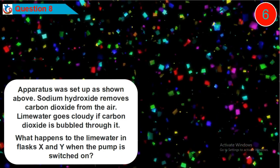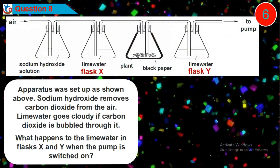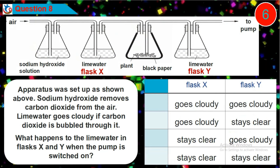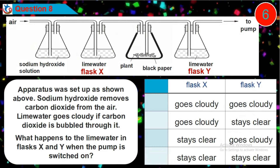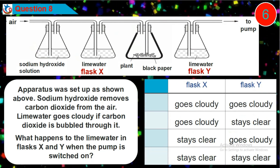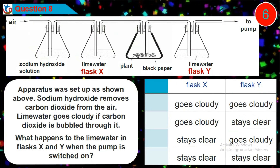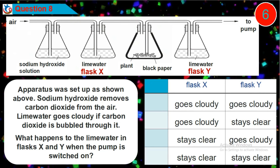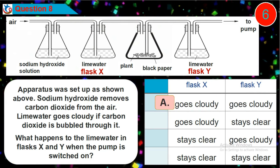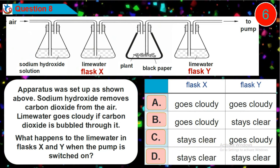Question eight: apparatus was set up as shown. Sodium hydroxide removes carbon dioxide from the air; lime water goes cloudy if carbon dioxide is bubbled through it. What happens to the lime water in glass X and Y when the pump is switched on? Is it option A, B, C, or D?